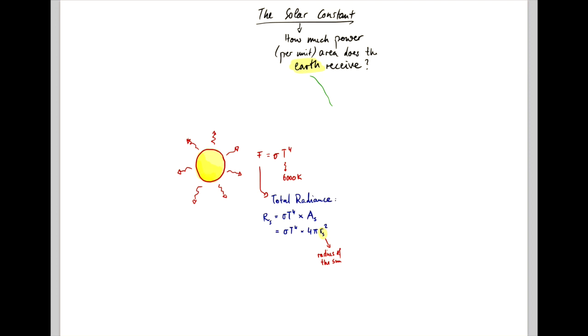So Earth is somewhere out here, cruising around the Sun at an orbit that is around 150 million kilometers.